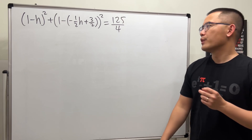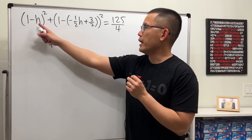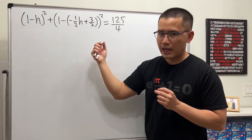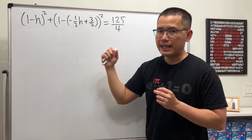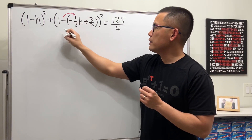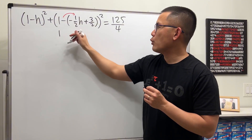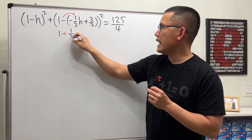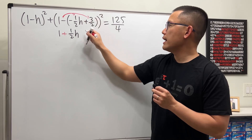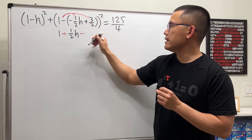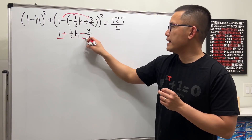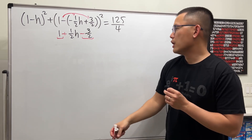We are going to solve for h. Notice we have this part — we should work inside out first. Let's distribute the negative, so we have one that will be plus one half h, and then multiply we get minus three over two.